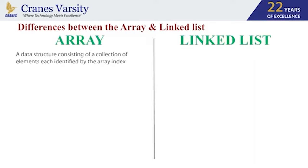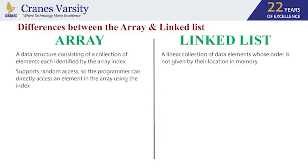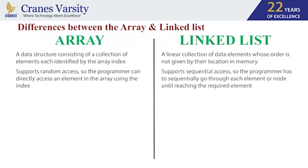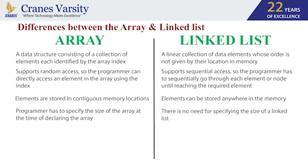An array is a data structure consisting of a collection of elements, each identified by an array index. A linked list is a linear collection of data elements whose order is not given by their memory location. Arrays support random access — the programmer can directly access an element using an index value — but linked lists support sequential access, meaning the programmer must go through each node until reaching the required element. Elements in arrays are stored in contiguous memory locations, while in linked lists elements can be stored anywhere in memory. Also, programmers must specify the size of an array at declaration time, whereas for a linked list there is no need to specify size — it can be extended or compressed depending on the requirement.